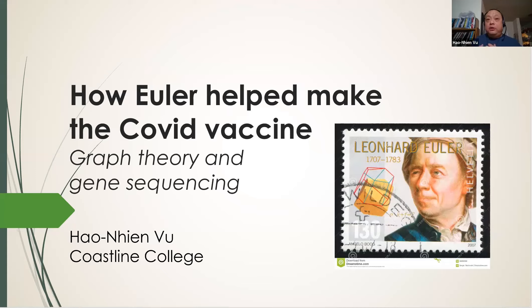Hi. In this video, I'll show how Leonard Euler, a Swiss mathematician from the 18th century, helped break the code and bring us the COVID vaccine. Now, the connection between Euler and the vaccine 300 years apart is this: Euler invented graph theory, graph theory makes gene sequencing possible, and gene sequencing gives us the COVID vaccine.